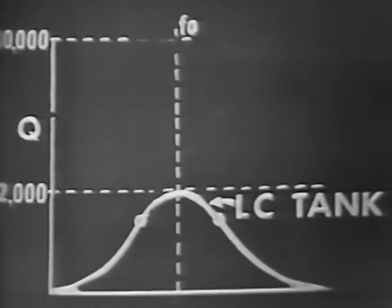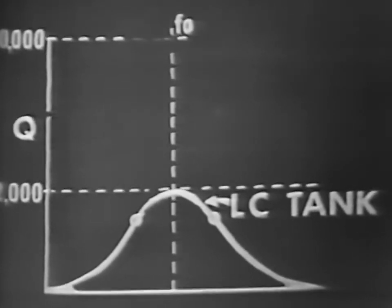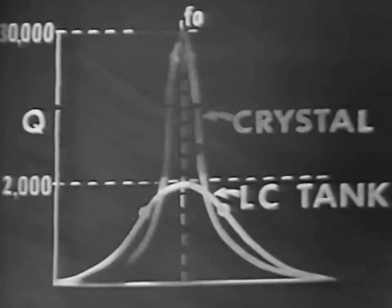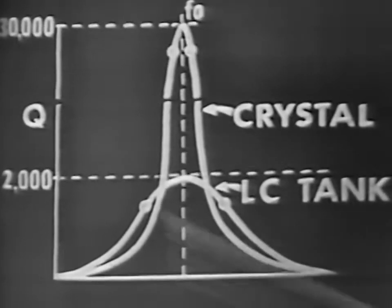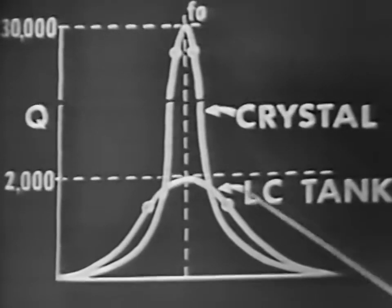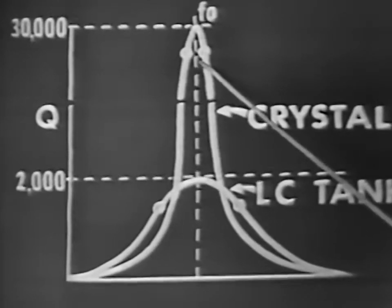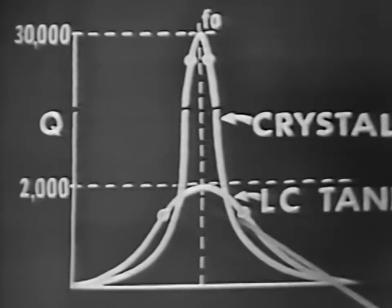Just because the vibrating crystal is equivalent to a series LC tank circuit, don't think it's the same thing — the crystal is far superior. The Q of the crystal circuit is many times greater than that of the LC circuit. The Q of an LC tank circuit is seldom greater than 2,000, whereas the Q of the crystal is sometimes as great as 30,000. Because of the high Q, the crystal has better frequency stability, as its bandwidth is much more narrow than that of the LC tank circuit.